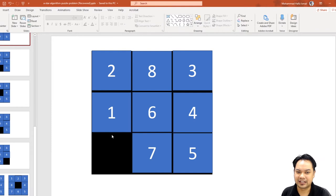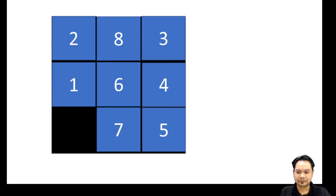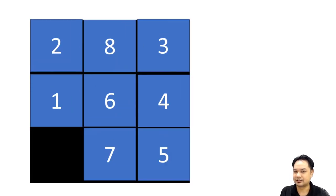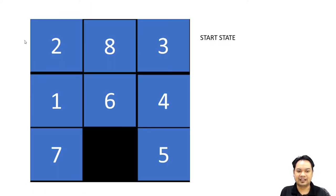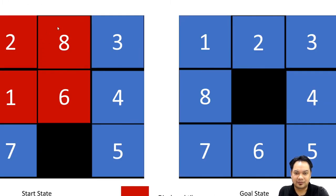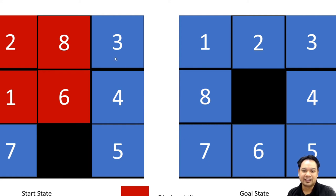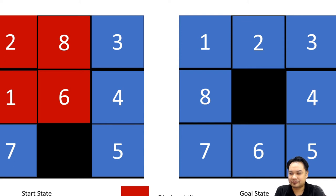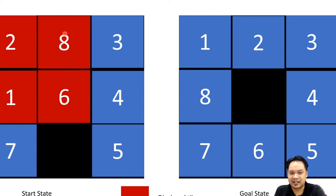This is an animation I can show you. This is the start state. And then, this is the number of displaced tiles. The number of displaced tiles — you have to compare it from the start state or initial state with the goal state. You see that tiles 2, 8, 1, and 6 are displaced.